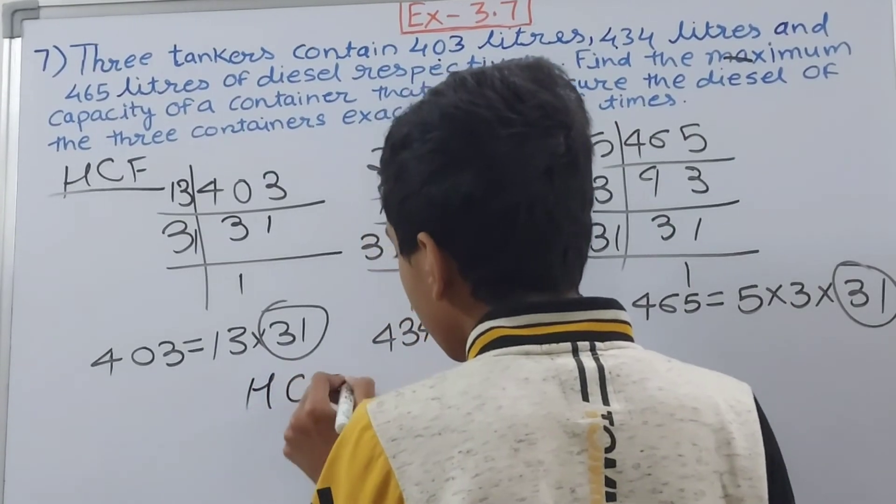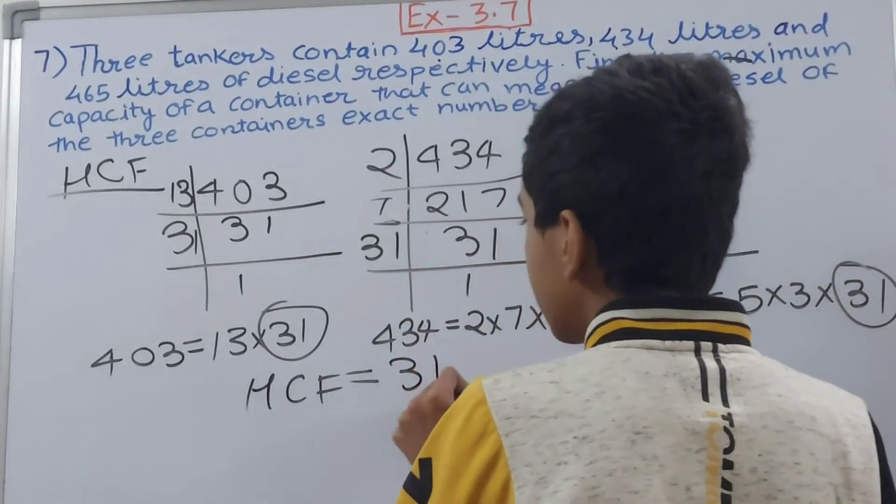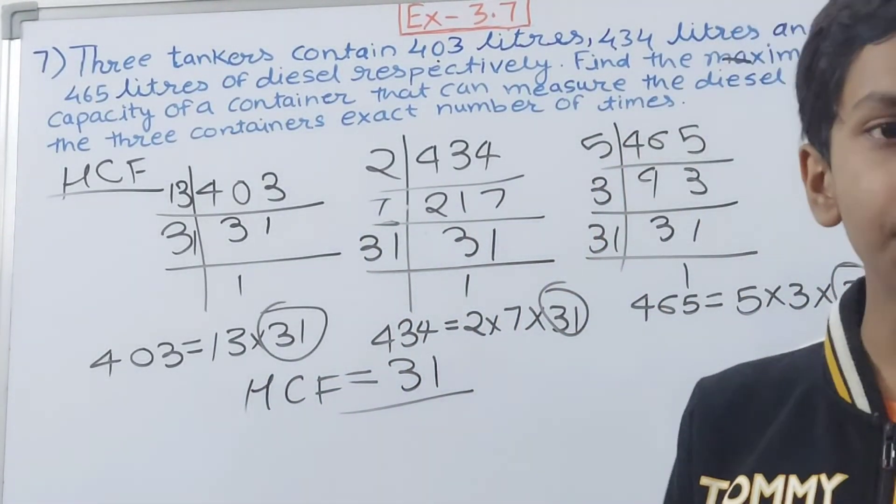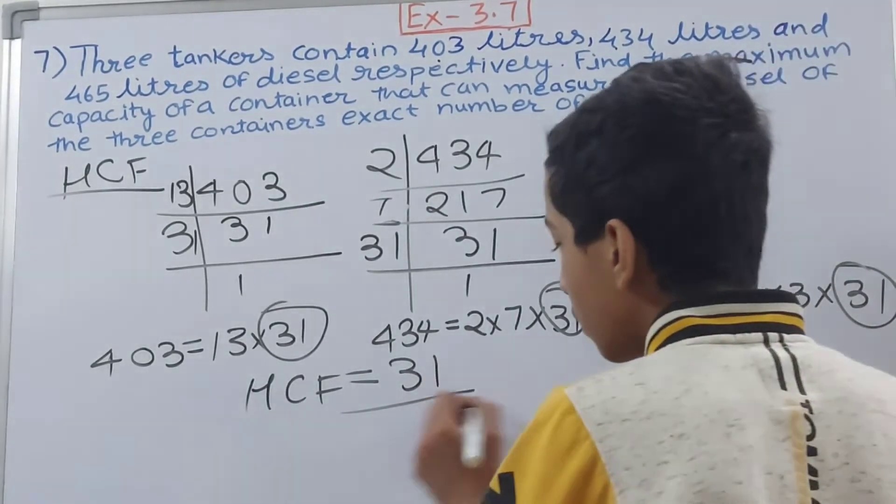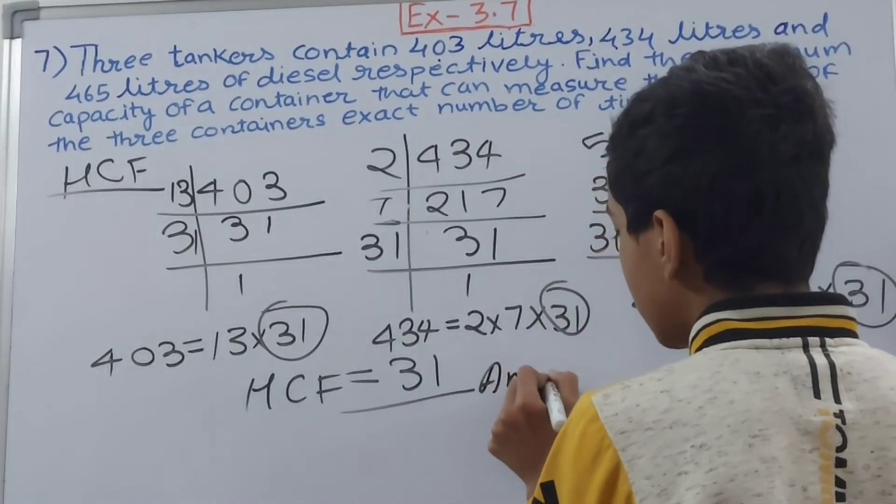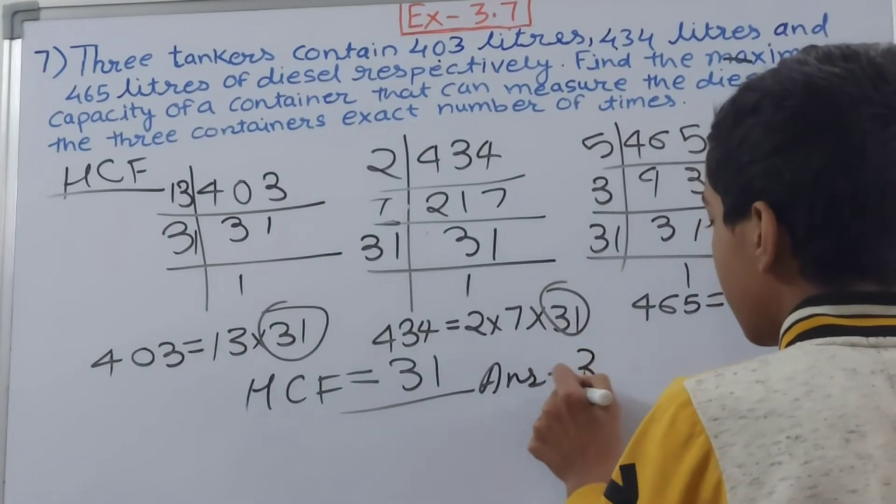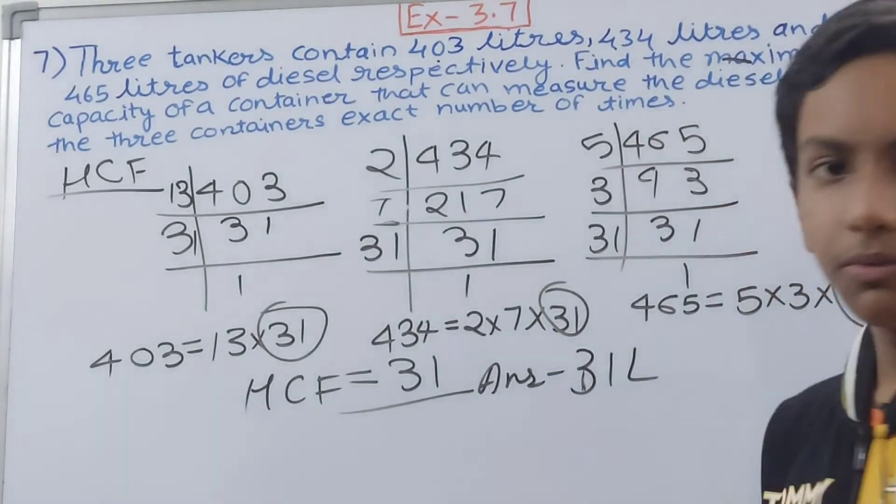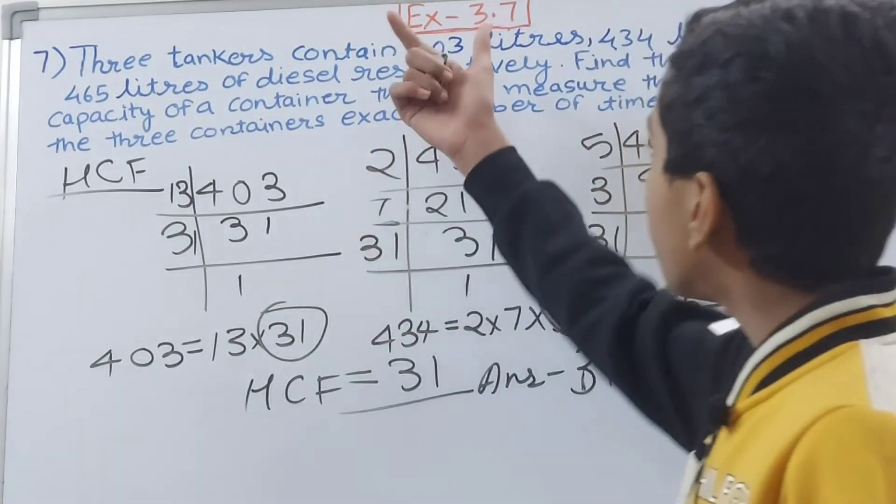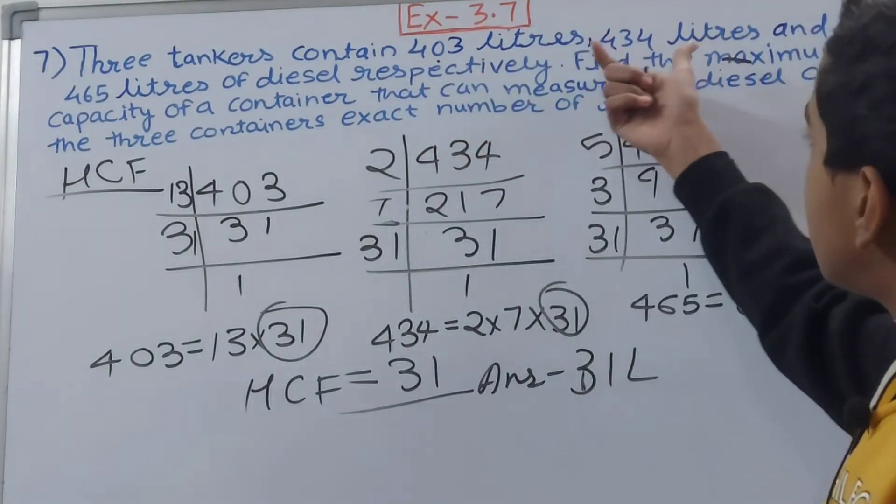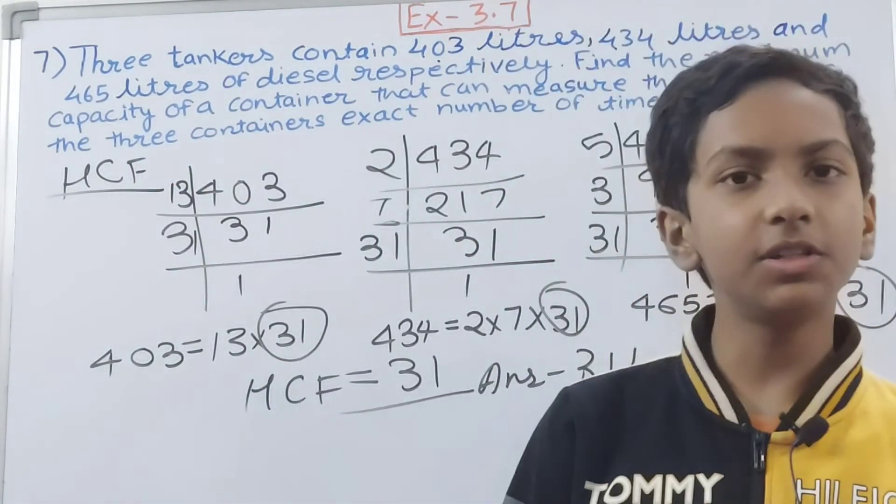So we have 31 which is HCF. That means they should take a container which can measure 31 liter of liquid, because it will measure 403, 434, 465 liters completely.